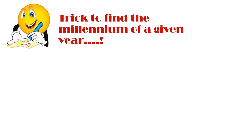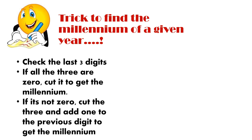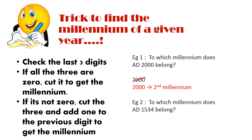For millennium, consider the last three digits. If they are all zeros, cut them to get the millennium number. If not, cut the last three digits and add one to the previous digit. For example, 2000 has three zeros — cut them and get 2, so it belongs to the second millennium. For 1534, cut 534 and add 1 to the previous digit — it also belongs to the second millennium.